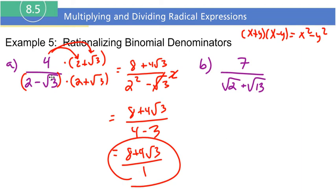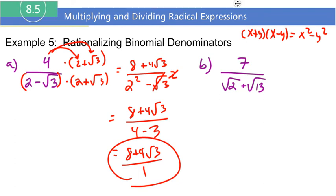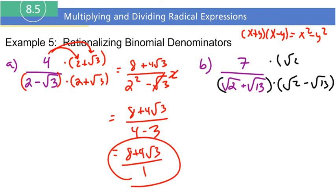That's the whole purpose of rationalizing — to eliminate the radical. Let's go on to Part B now. We want to get rid of the radical so we're going to multiply by its conjugate. I'm going to multiply by radical 2 minus radical 13, and I have to do the same thing to the top: radical 2 minus radical 13.